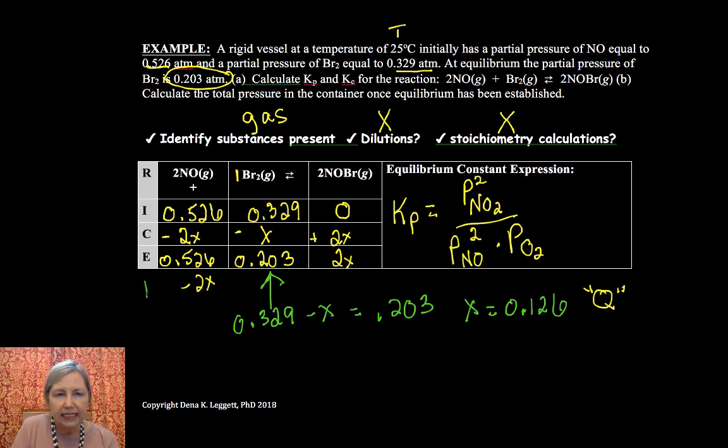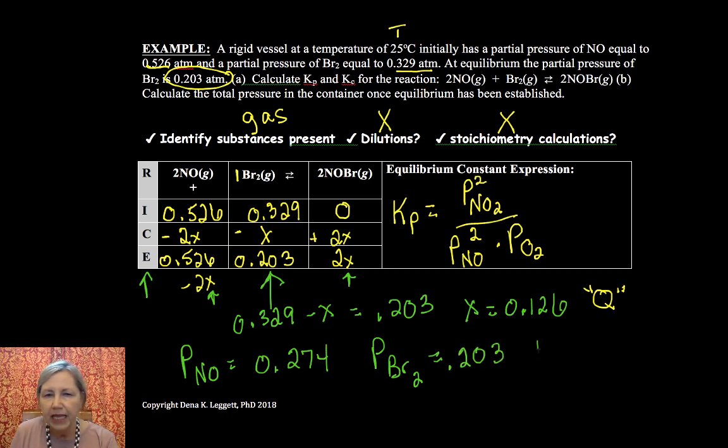So if I plug in X in all of those places here. So I'm going to plug in for X there. Plug in for X there. You would get values. Let's say partial pressure of NO is going to equal 0.274. And the partial pressure of BR2, we already know at equilibrium, is 0.203. And my partial pressure of NOBR is 2 times X. So that's equal to 0.252.